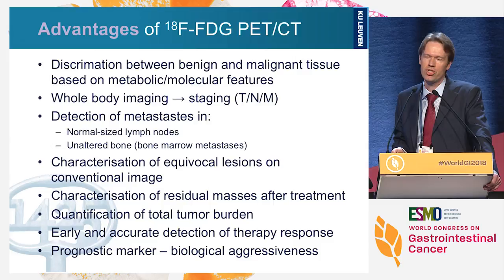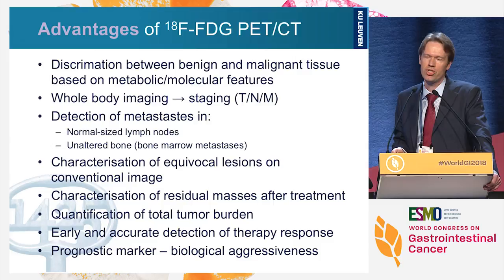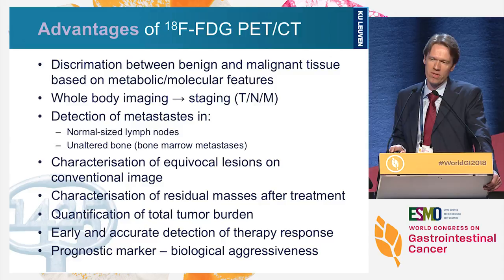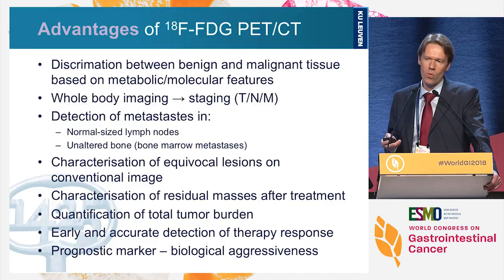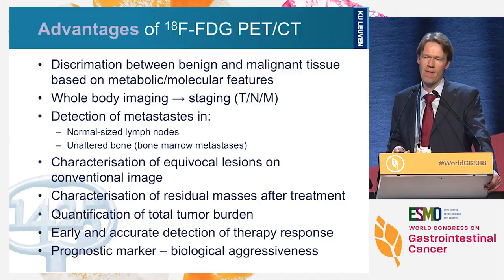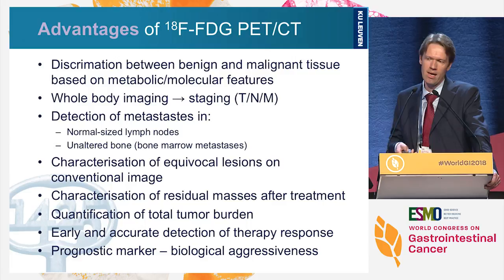The advantages of FDG PET-CT are quite numerous. We can discriminate between benign and malignant tissue based on metabolic and morphological features. We can do whole body imaging providing T, N, and M staging. We can detect metastases in normal-sized lymph nodes, detect bone marrow metastases without mineral content changes, characterize equivocal lesions such as adrenal adenomas, and characterize residual masses after treatment.